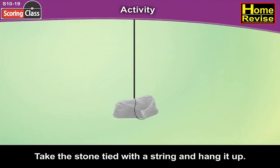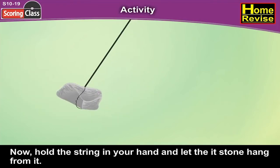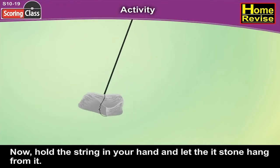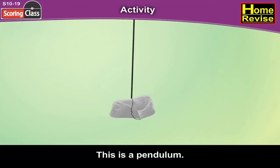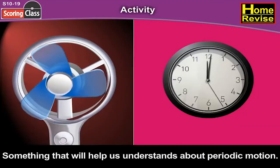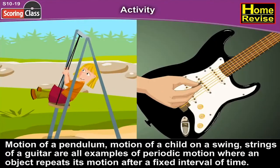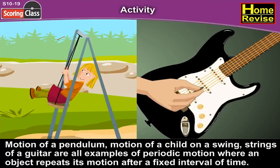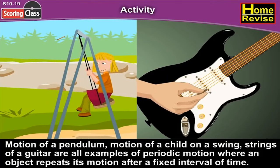Take the stone tied with a string and hang it up. Hold the string in your hand and let the stone hang from it. Pull the stone to one side with the other hand and let it go. This is a pendulum — something that will help us understand periodic motion. The motion of a pendulum, motion of a child on a swing, and strings of a guitar are all examples of periodic motion, where an object repeats its motion after a fixed interval of time.